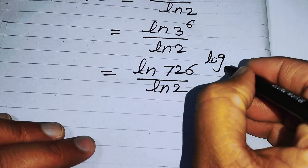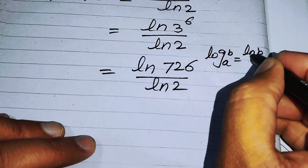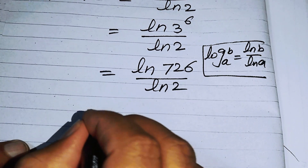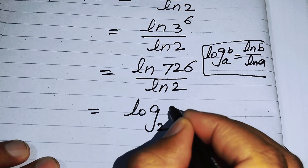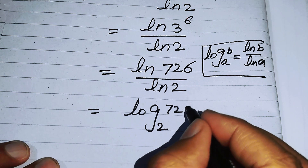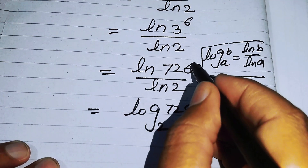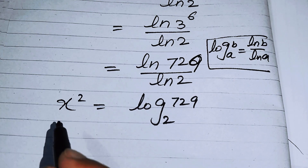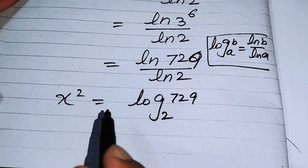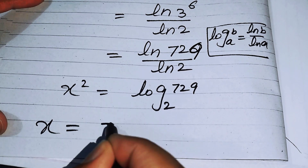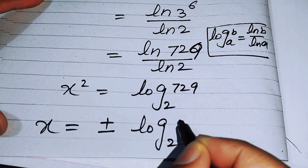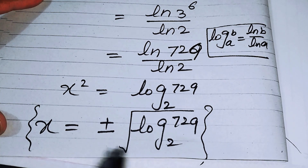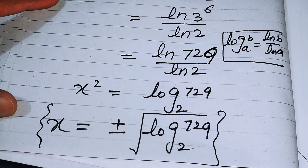We apply the logarithmic change of base property: log a over log b can be written as log base a of b. Using this property, we rewrite the expression as log base 2 of 729, where 729 equals 3 to the power of 6. Finally, we apply the square root to both sides, and the value of x is plus or minus the square root of log base 2 of 729. This is our final answer.